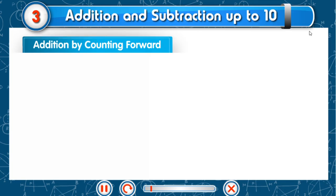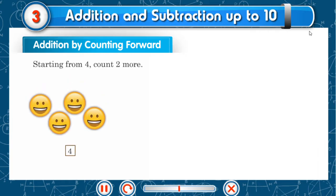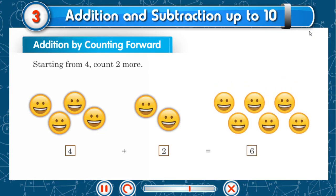Addition by counting forward. Starting from 4, count 2 more. 4 plus 2 is equal to 6.